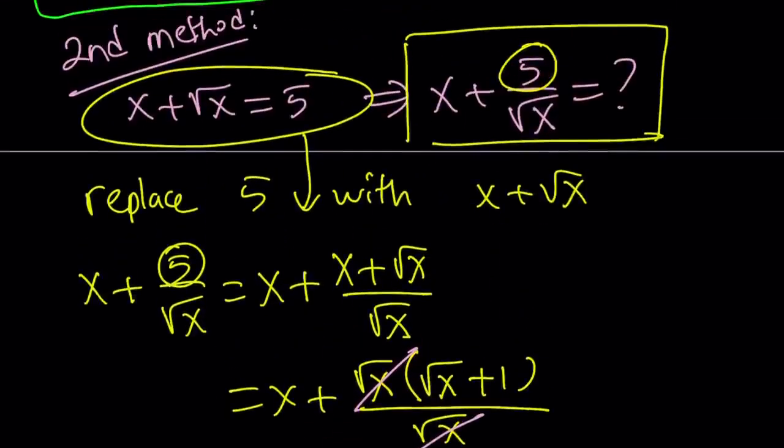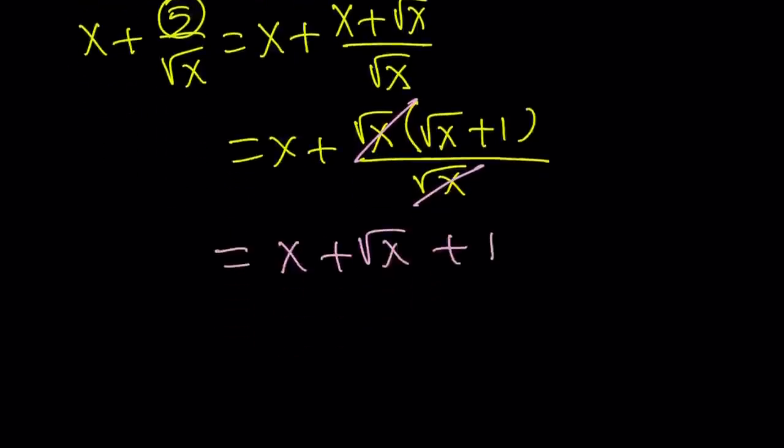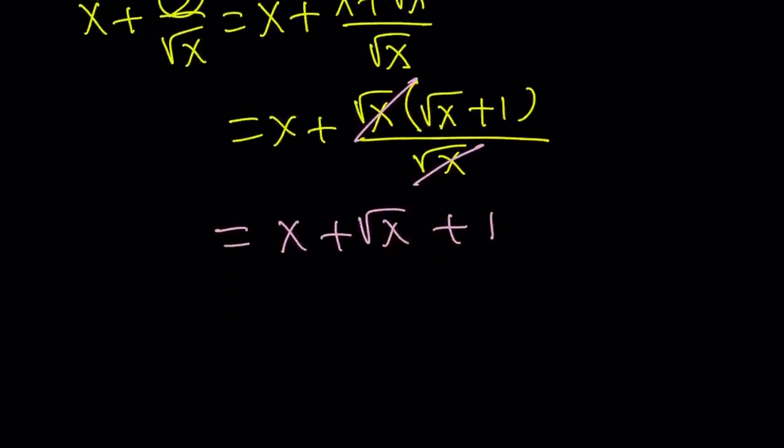But guess what? We already know x plus square root of x is equal to 5. So it has a numerical value. Therefore, I can just replace x plus root x with 5. And this gives me 6 as the answer.